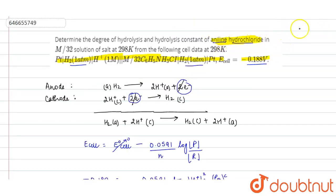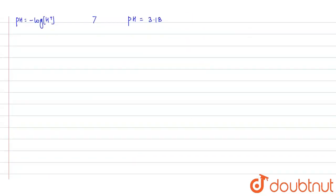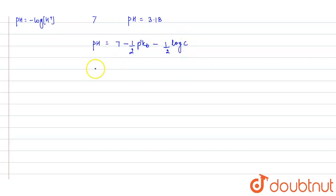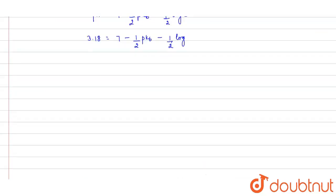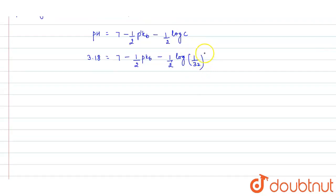Aniline hydrochloride is a salt of a weak base and a strong acid, so its pH equals 7 minus half pKb minus half log C. Substituting pH = 3.18 and concentration C = 1/32, and solving this equation, we get Kb equals 7.15 × 10⁻¹⁰.